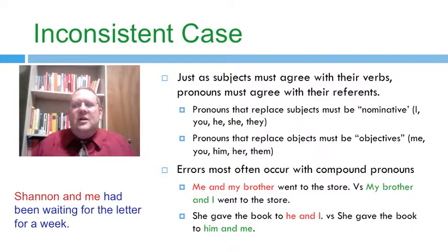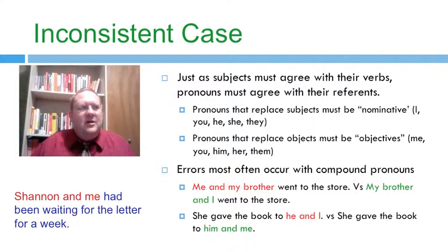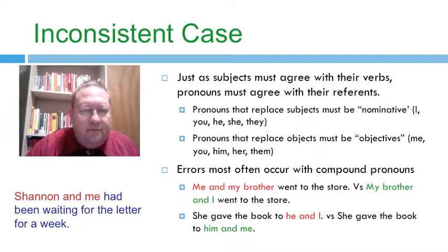'She gave the book to he and I.' A lot of times, because we've been told over and over again to say 'my brother and I went to the store,' which is correct, when we have a similar construction that is an object of a sentence, we overcorrect. And we say 'she gave the book to he and I.' You would never say 'she gave the book to he,' but when you compound a pronoun with another word, it makes more sense to make these kinds of case errors. Just something to be aware of.